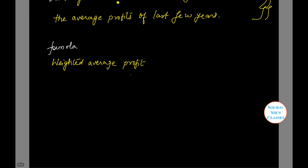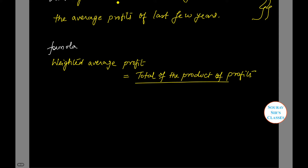First we will calculate the weighted average profit, and then we will move on to goodwill. The weighted average profit is the total of the product of profits, divided by the total of weights.